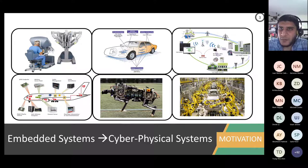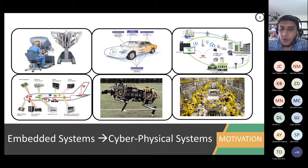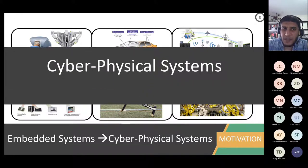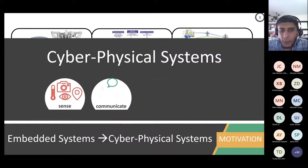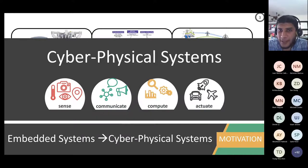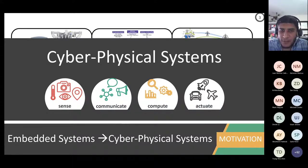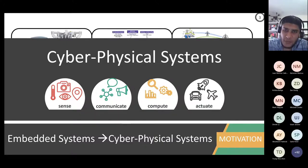Some more examples: healthcare, automotive, smart infrastructure, robotics, industry 4.0, avionics — all of these are cyber-physical systems. If you think about a cyber-physical system, you do four main things, which you will be doing in the lab: you sense the physical world through sensors, you communicate the sensed data to your processor or microcontroller, you compute — doing some actions based on what you sensed — and you actuate.